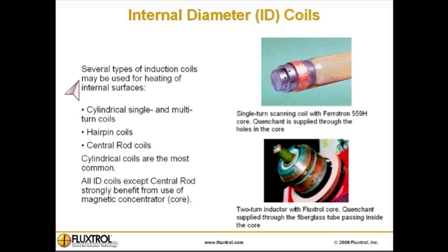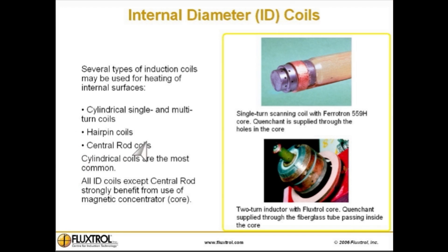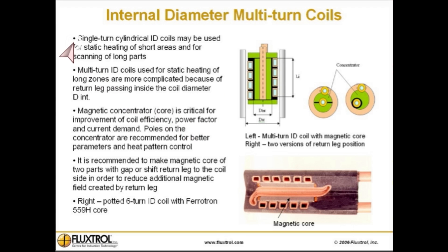Internal diameter coils: several types of induction coils may be used for heating of internal surfaces — cylindrical single and multi-turn coils, hairpin coils, and central rod coils. Cylindrical coils are the most common. All ID coils except central rod strongly benefit from use of a magnetic concentrator or core. Examples of single-turn and two-turn coils with magnetic cores are shown here.